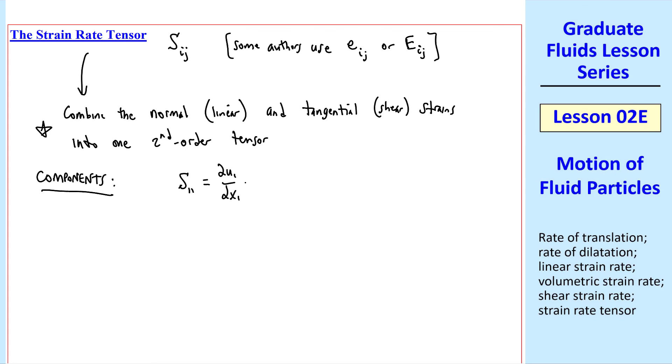S11 is del u1 del x1 or u1 comma 1. S22 is del u2 del x2 or u2 comma 2. S33 is del u3 del x3 or u3 comma 3. These are the linear strain rates.